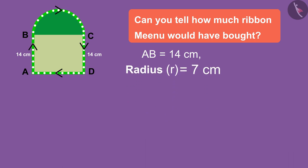With the help of this calculation, we find the length of the ribbon mounted on the semi-circle BC.